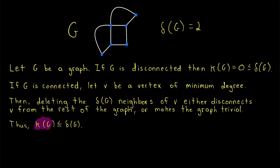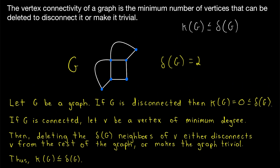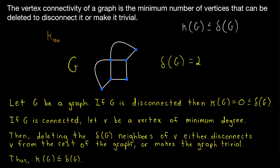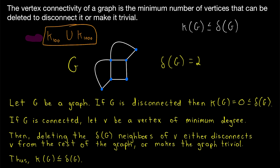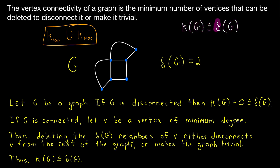So that's how we know κ(G) ≤ δ(G) for any graph. But don't get the wrong idea — you might think that a high minimum degree forces high connectivity, but that is not true. For example, consider the complete graph K₁₀₀ union with the complete graph K₁₀₀₀. The minimum degree of this graph is 99, yet it consists of two disconnected components, so its vertex connectivity is zero. The vertex connectivity is less than or equal to the minimum degree, but a high minimum degree does not force high connectivity — this is just an upper bound.